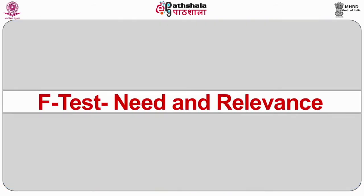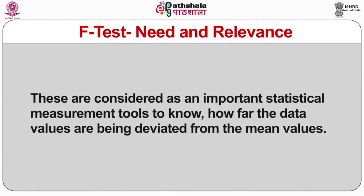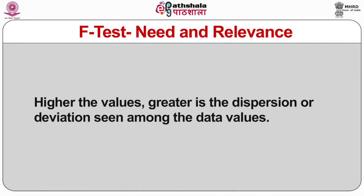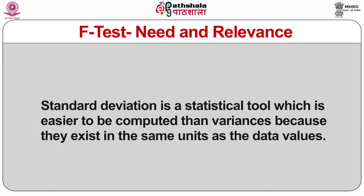F-Tests were named after Sir Ronald Fisher. F-Test can be described as the ratio between the squares of two standard deviations. These are considered important statistical measurement tools to know how far the data values are deviated from the mean values. Higher the values, greater is the dispersion or deviation among the data values. Variance is defined as the square of standard deviation. Standard deviation is a statistical tool which is easier to compute than variances because they exist in the same units as the data values; however, analysts make use of variances in their computations.